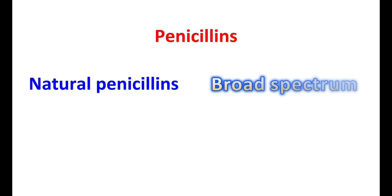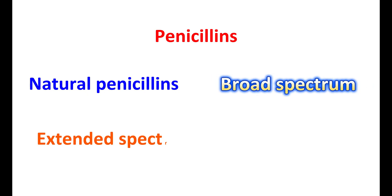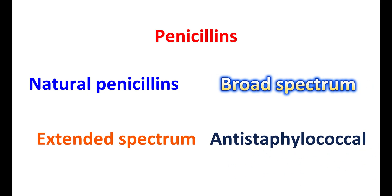Penicillins can be classified into different categories: natural penicillins, broad-spectrum penicillins, extended-spectrum penicillins, and anti-staphylococcal penicillins. Among them, amoxicillin is classified as a broad-spectrum antibiotic.